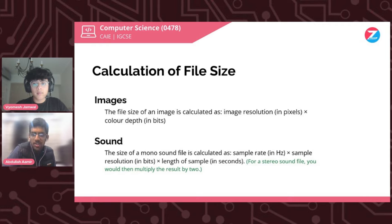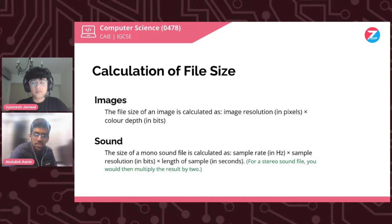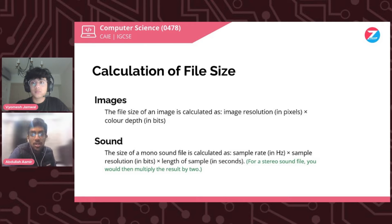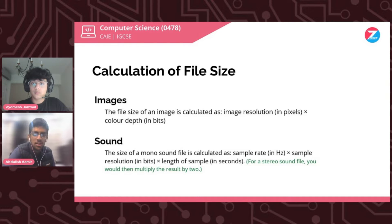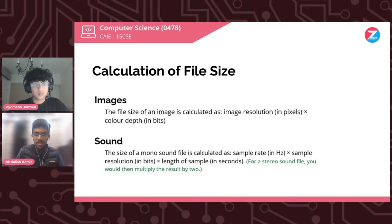How do we calculate the file size of an image? The file size is given by image resolution multiplied by color depth. The color depth tells us how many bits are required to represent a color. Multiplying that by the number of pixels tells us how many bits each pixel is using. That gives us the file size. You can memorize this formula and use it in the exam.